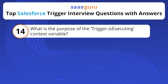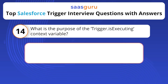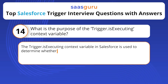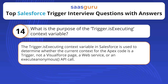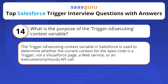What is the purpose of the trigger.isExecutingContext variable? The trigger.isExecutingContext variable in Salesforce is used to determine whether the current context for the Apex code is a trigger — not a Visualforce page, a web service, or an ExecuteAnonymous API call.